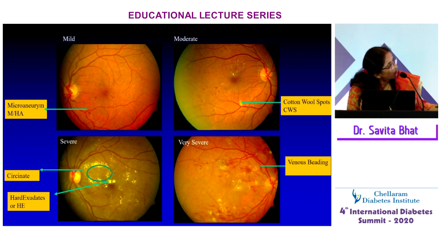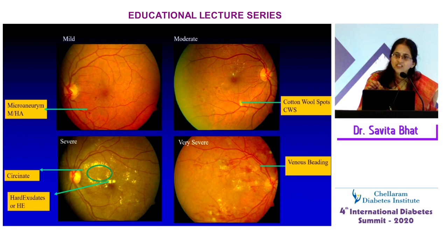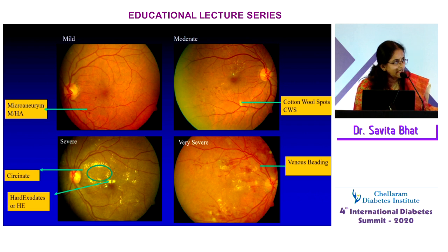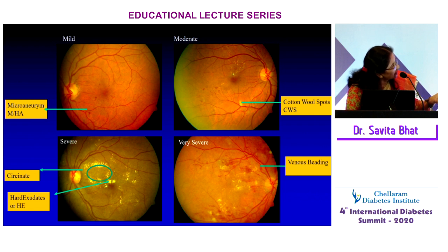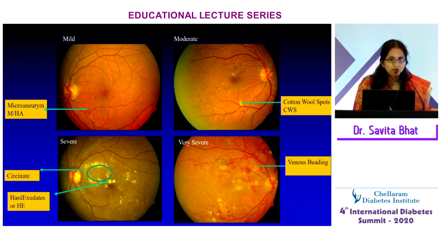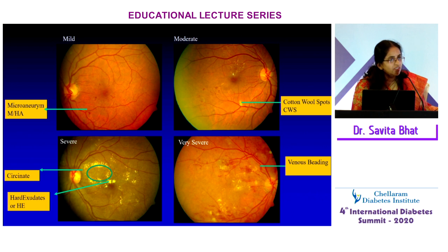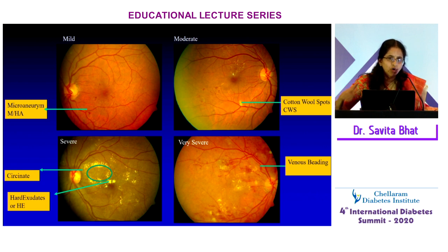A fluffy, whitish lesion larger than a hard exudate is a cotton wool spot, representing axoplasmic delay usually found at the edge of an infarct. If there are 20 or more hemorrhages in all four quadrants, or at least two areas of venous beading, or at least one area of intra-retinal microvascular abnormalities, we categorize the NPDR as severe. If there are more than two quadrants of venous beading or IRMAs in more than one quadrant, it is classified as very severe NPDR.